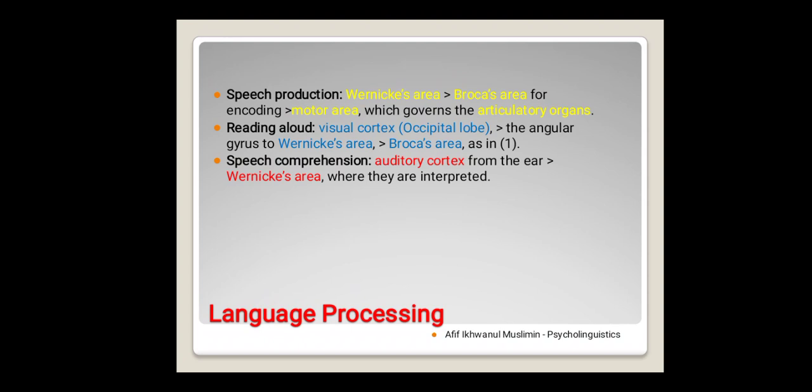The second language process is reading aloud. In reading aloud, you will see some input from visual things like written text, so it works with visual cortex or in the occipital lobe in the back part of the brain. Then the information will be transmitted by angular gyrus to Wernicke's area.